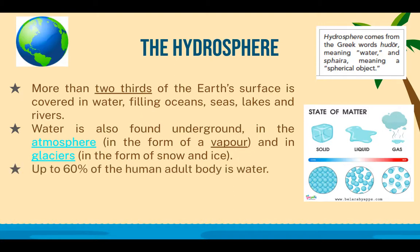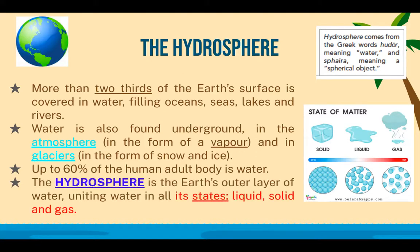Up to 60% of the human adult body is water. The hydrosphere is the Earth's outer layer of water, uniting water in all its states: liquid, solid, and gas. Don't ever forget the states of matter — you see this every day. This is solid water, this is liquid water, and this is H₂O in its gas form.